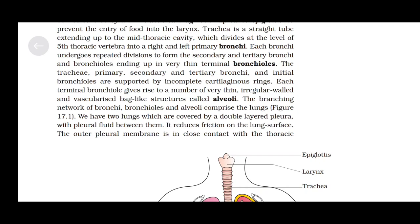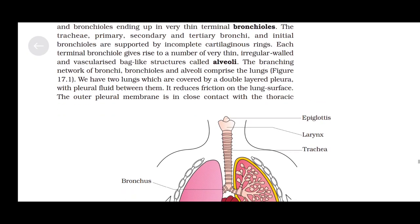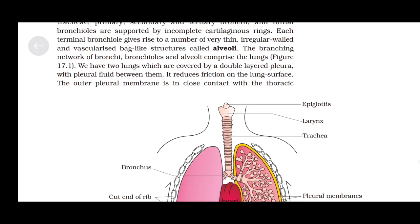Each terminal bronchiole gives rise to a number of very thin, irregular-walled and vascularized bag-like structures called alveoli. The branching network of bronchi, bronchioles, and alveoli comprises the lungs. We have two lungs which are covered by a double-layered pleura with pleural fluid between them, which reduces friction on the lung surface.